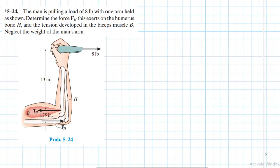Determine the force FH that exerts on the humerus bone edge and the tension developed in the biceps muscle. Neglect the weight of the man's arm. This problem is coming from the engineering mechanics statics textbook 13th edition by R.C. Hibbeler.